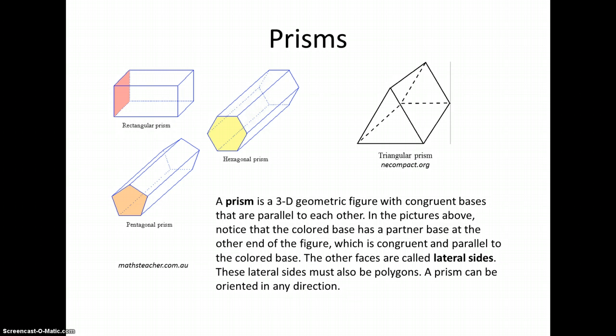A prism can be oriented in any direction. So if you look at this triangular prism, you might think that it's a rectangular prism, but notice where the parallel bases are. It's the triangles. It's just been tilted over to look like a tent.